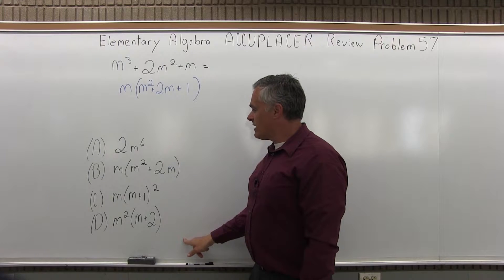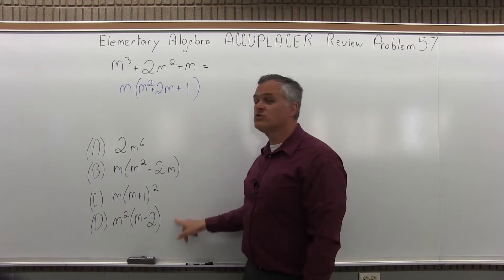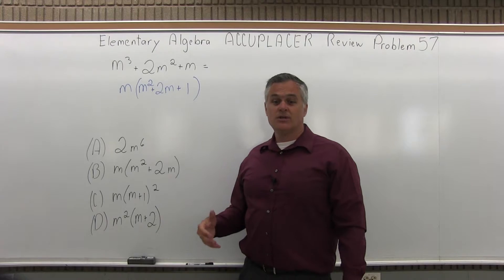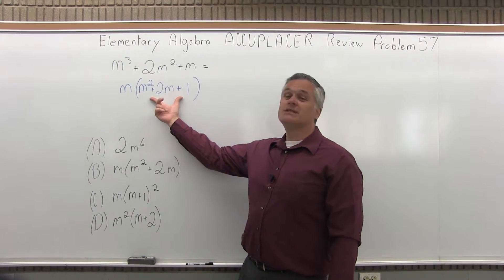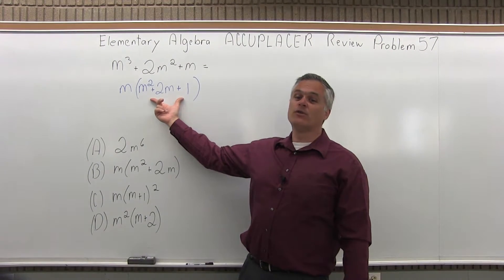And if I look at my four options, b is close, but nothing is really a perfect match. So what's wrong? Well, what's wrong is the stuff inside the parentheses can be broken down a little further.